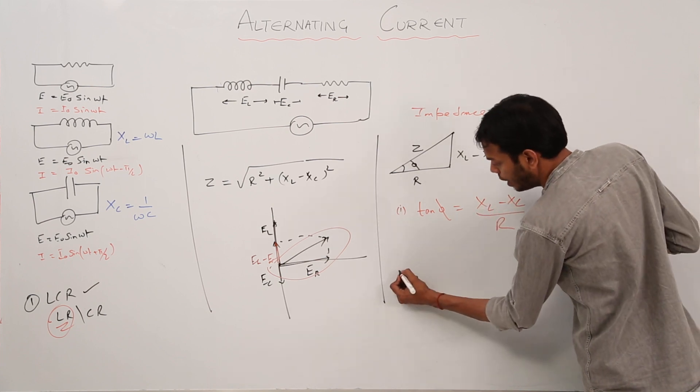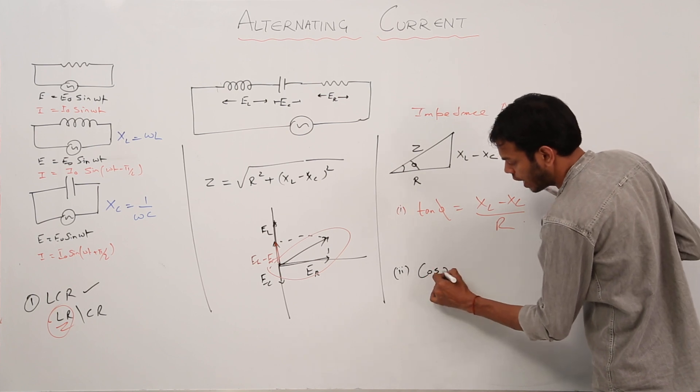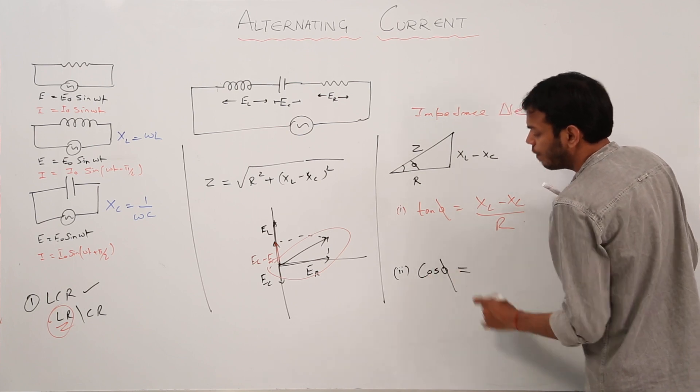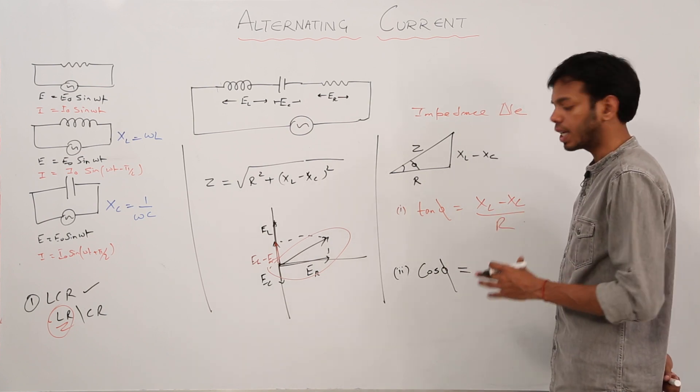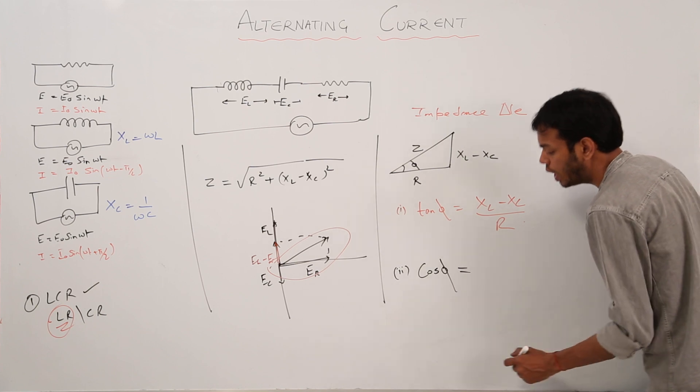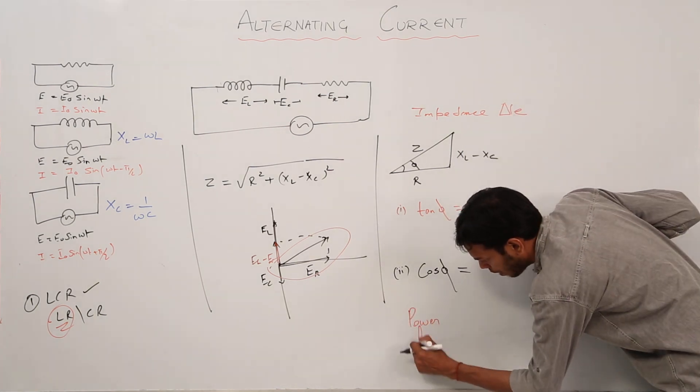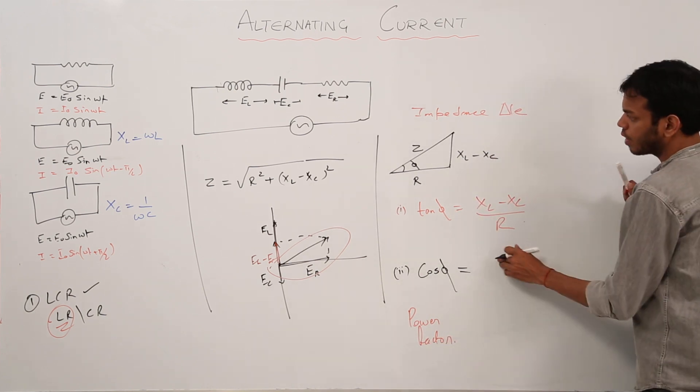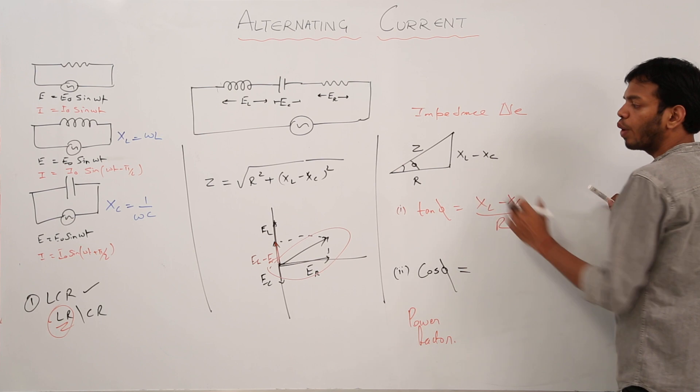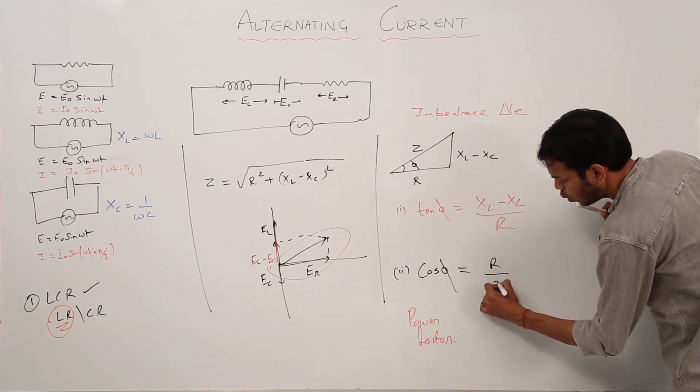Number two, you can find out the value of cos phi. When we will do the average power, you will see that average power associated with LCR circuit contains this part which is called power factor. This power factor cos phi is basically R over Z.